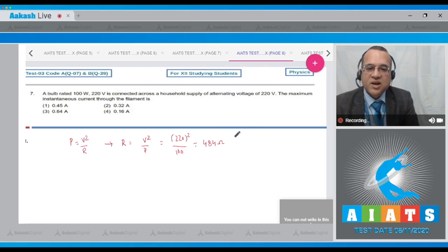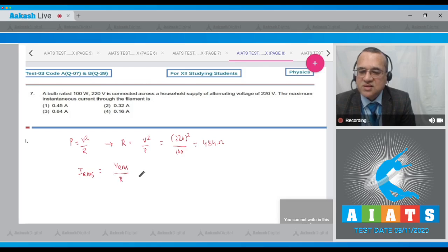Now, this is connected to an AC of 220 volt. Then what will the current IRMS be equal to? IRMS is equal to the voltage which is given to you divided by the resistance. VRMS, how much? It is 220, and what is this? This is 484. And you solve, this becomes approximately this value.